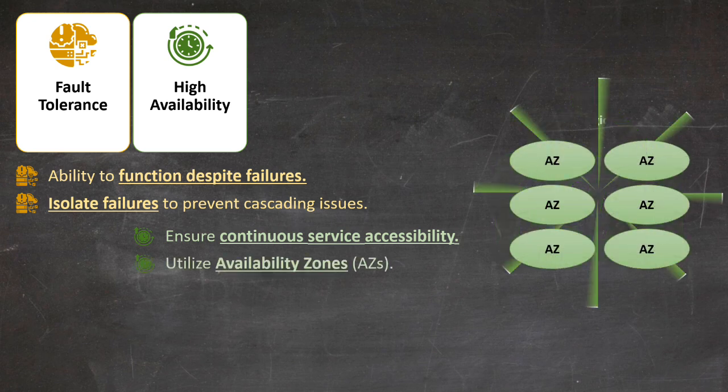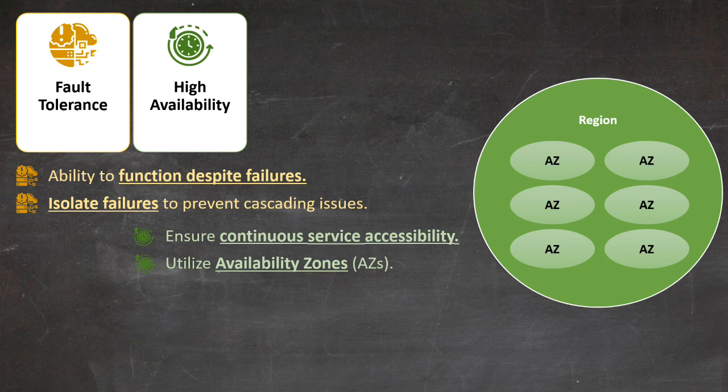One key strategy for achieving high availability is the use of availability zones, or AZs. These are isolated locations within a cloud region that have their own power, cooling, and networking. By distributing your services across multiple AZs and multiple regions, you can maintain operations even if one zone or region experiences issues.